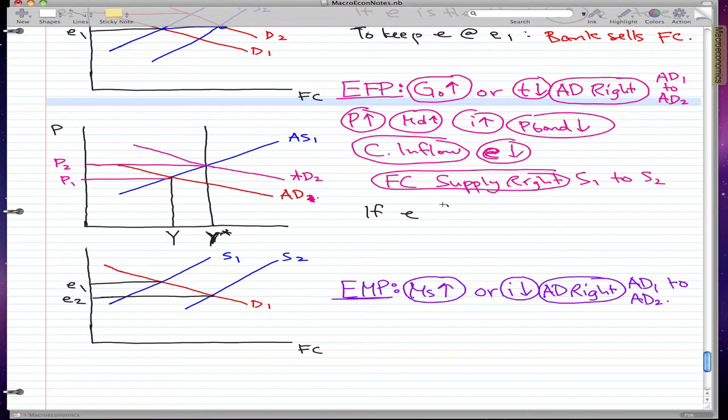By drop I mean appreciation. So if e is flexible, then e falls from e1 to e2 as I've shown in the graph here. E1 fell to e2. To keep e at e1...